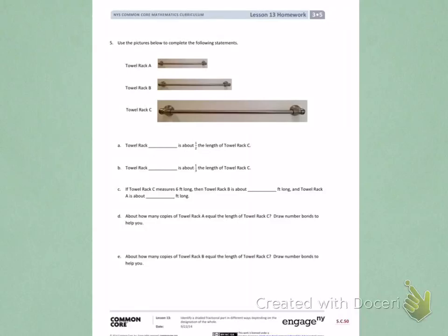This is Module 5, Lesson 13, Homework, Page 2. Number 5. Use the pictures below to complete the following statements. I see I have towel rack A, towel rack B, and towel rack C.